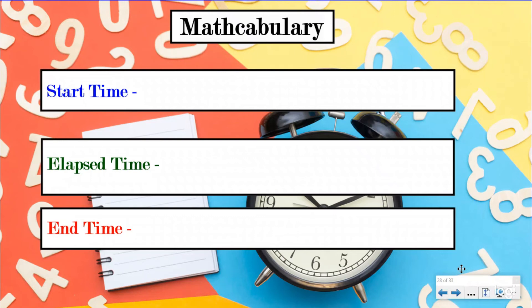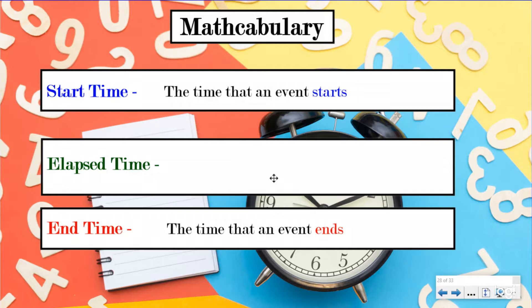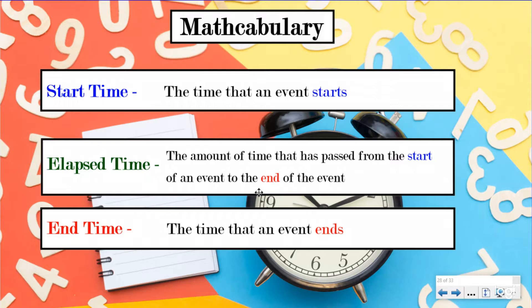Let's take a look at our mathcabulary set again. You don't need to write this down because you already have it in your notes from the previous lessons, but it is good to review, especially if you're new with us today. The start time is the time that an event starts. The end time is the time that the event ends. The elapsed time is the amount of time that has passed from the start of an event to the end of an event — that's typically the one that gives us a little trouble at first.